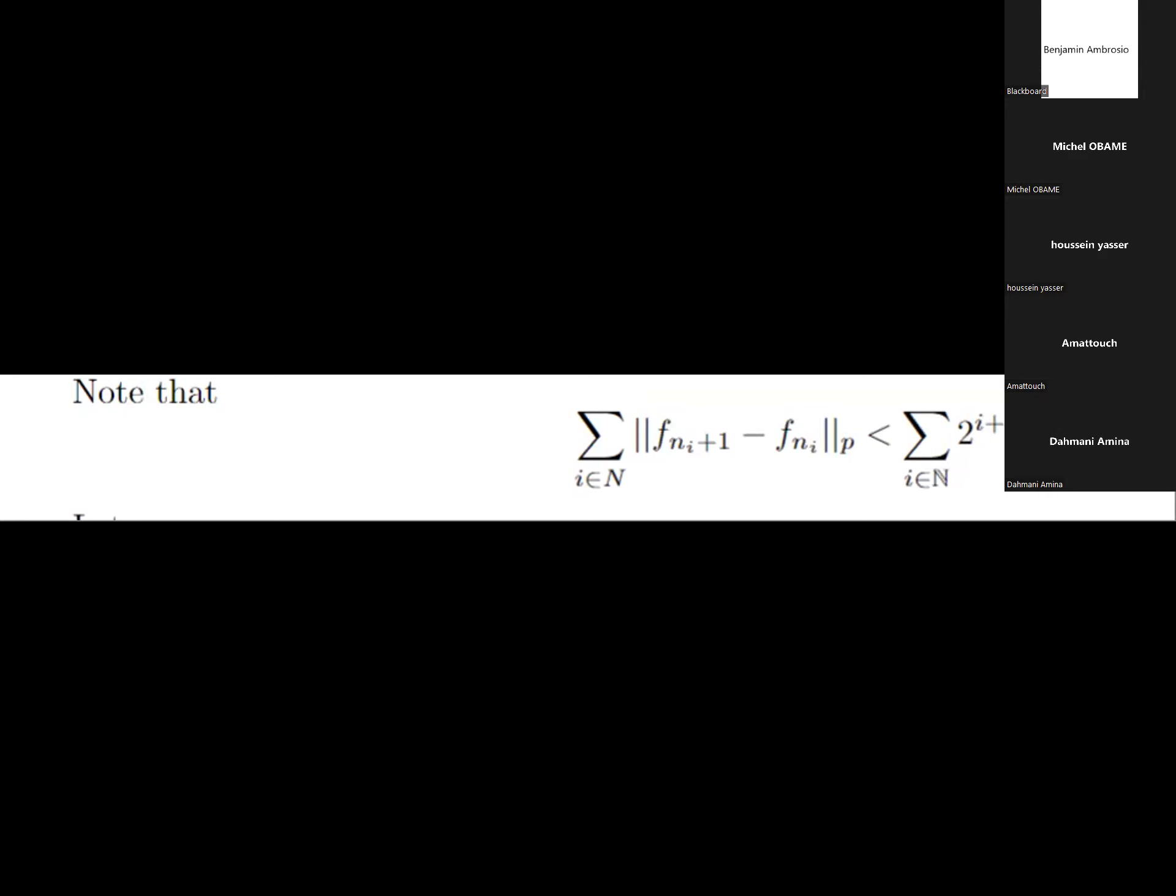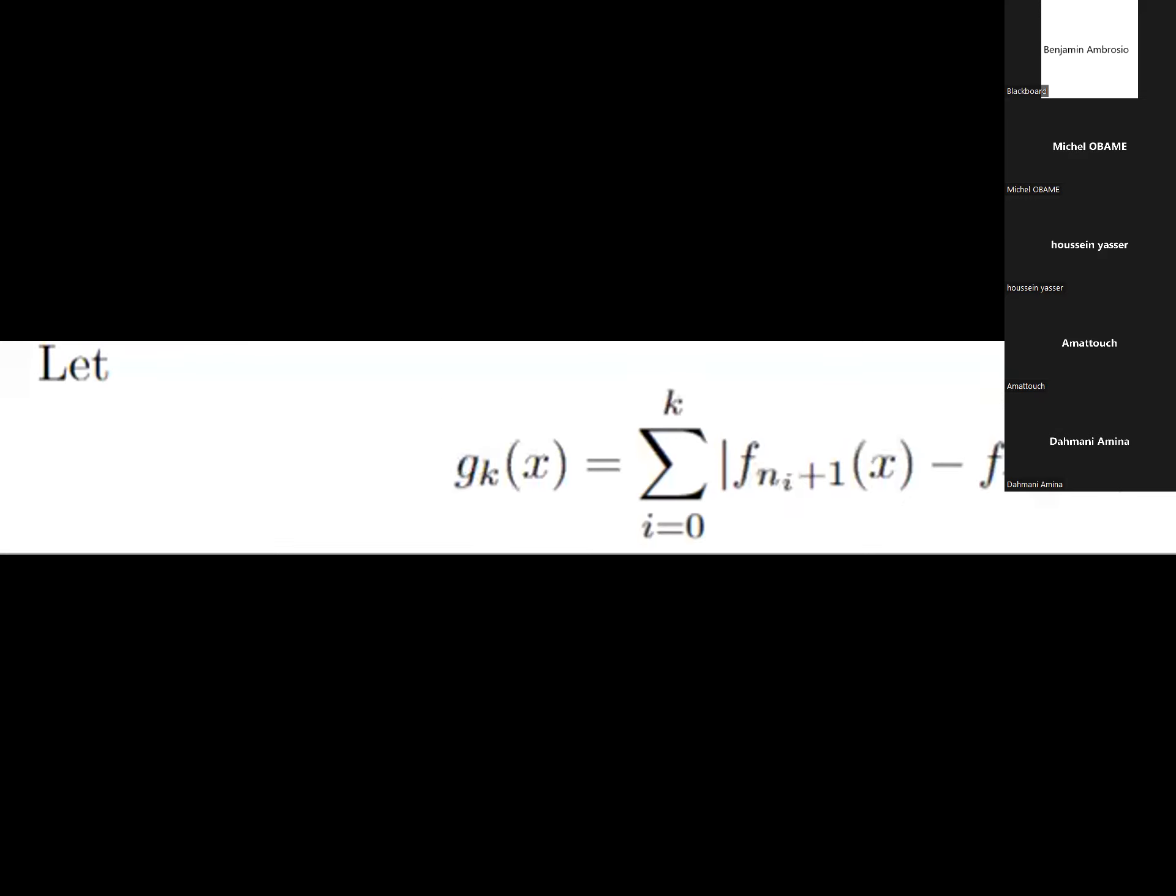So now I can define g_k of x. If I apply the Beppo-Levi monotone convergence theorem, you can find it in the book of Brezis, then you can deduce that this g_k converges almost everywhere to a finite limit and we call this limit g of x.